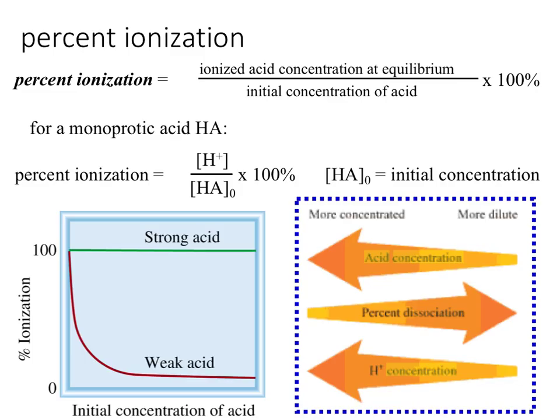Percent ionization is basically the degree to which a specific acid has ionized in solution. Percent ionization is equal to the ionized acid concentration divided by the initial concentration of the acid, multiplied by 100.